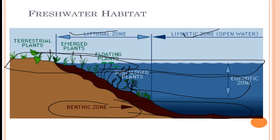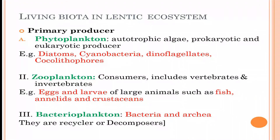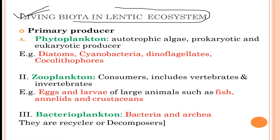The upper warmer layer is the euphotic zone and the lower coldest layer is the hypolimnion. Moving on, let's talk about the producers and consumers in the lentic ecosystem. The primary producers are phytoplankton — the basic producers found in any lentic ecosystem.